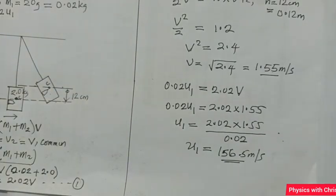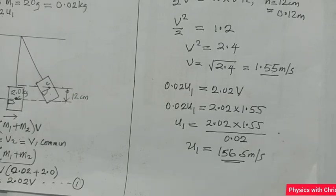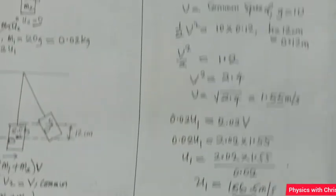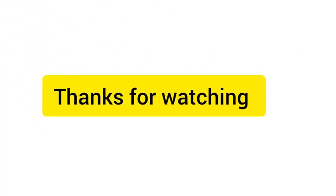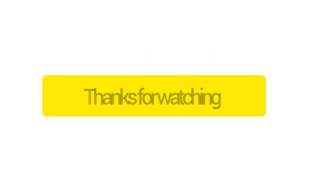That gives the initial speed of the bullet while it was traveling towards the ballistic pendulum. That is how this question is solved. Thank you very much.